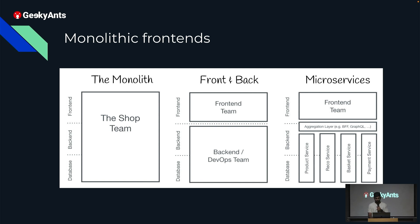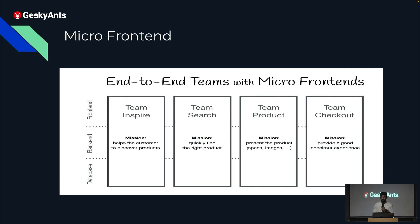The backend team got separated and could work independently without depending on other teams, but the frontend team still had a single repo and depended on others. With microservices, there was no equivalent concept for the frontend — that's where micro frontends came in, turning a horizontal organization into a vertical one.